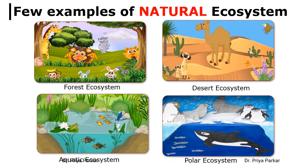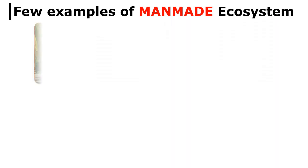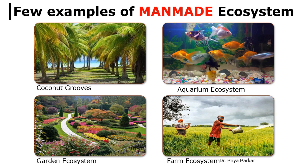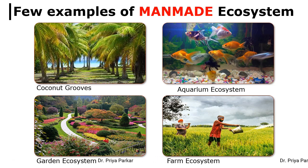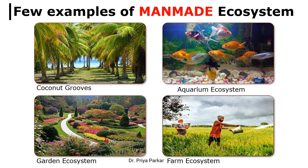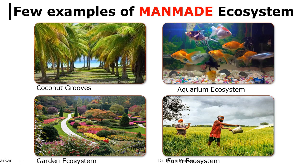In the case of man-made ecosystem, the human being controls and decides the components. Take the example of an aquarium or fish tank at your home, where you decide everything — from the type and number of fishes, the timings of food serving, and when to change the water, and so on. In the case of farm ecosystem also, the farmer decides the type of crop, and the time and amount of fertilizers and water for the crop. Thus, man-made ecosystem depends entirely on human beings.